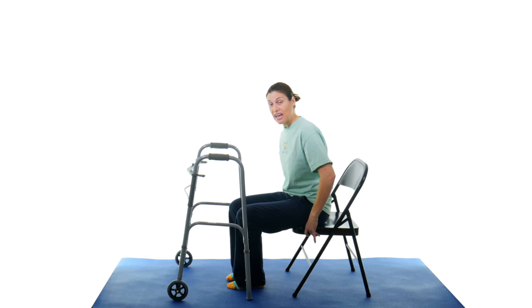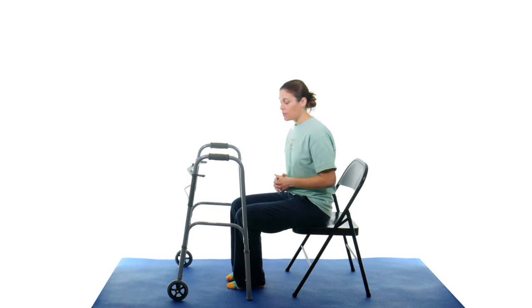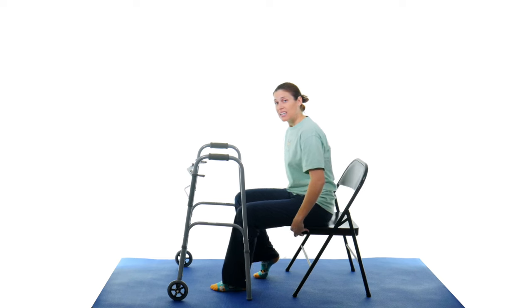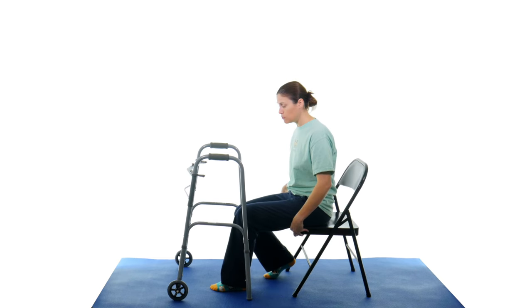So you want to shift to the edge of the chair. This is going to help give you that momentum to get up when you go to stand up. Whatever side is your strongest leg, sometimes I know that's not easy to decide because they're both weak, whichever side you think is your strongest leg or maybe even your dominant side, you want to slide that back a little bit. So let's say my right leg is my stronger side. I'm going to slide it back just a little bit to help give me that push. So I'm sliding to the edge,